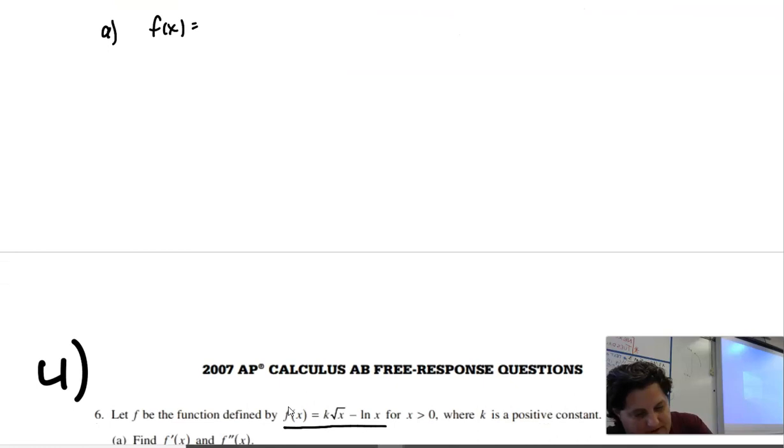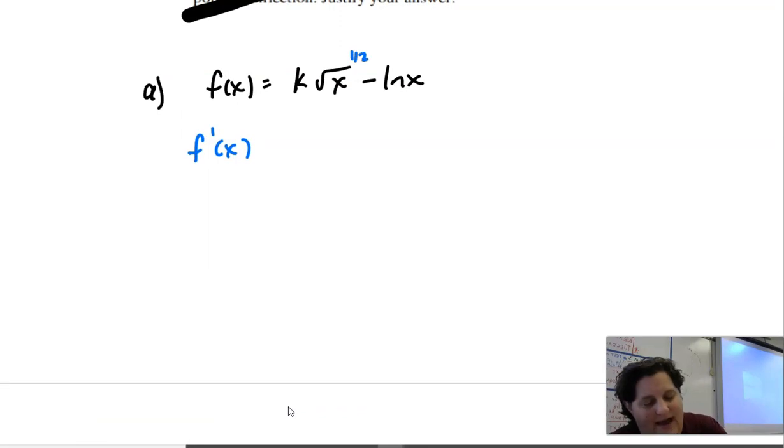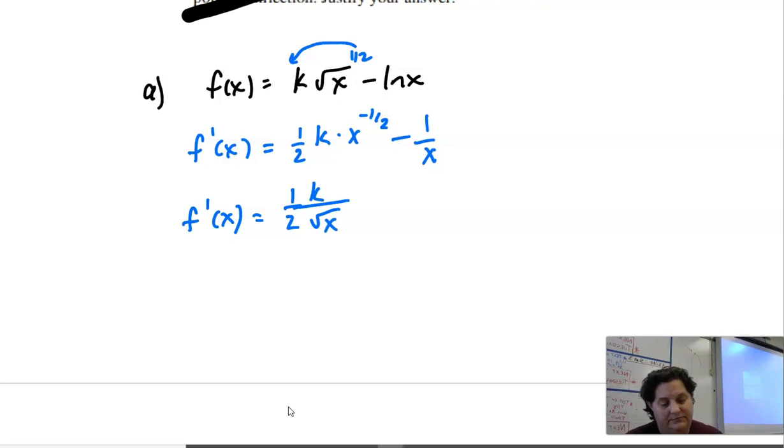Let me write my original problem up here. F of X is K square root X minus ln X. Let's find a first derivative. I think the way that I'm going to do this is I'm going to call this one-half because I've got to take multiple derivatives anyways. Bring it down in front. So it's going to be one-half K times X to the negative one-half. K is a constant, so it's just going to stay there. And then the derivative of ln of X is 1 over X. So it's one-half K and then X to the negative one-half that goes on the bottom as square root X.